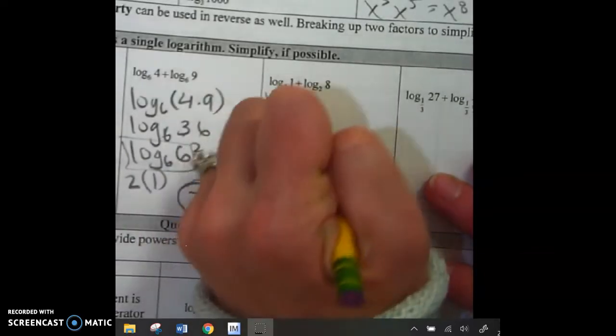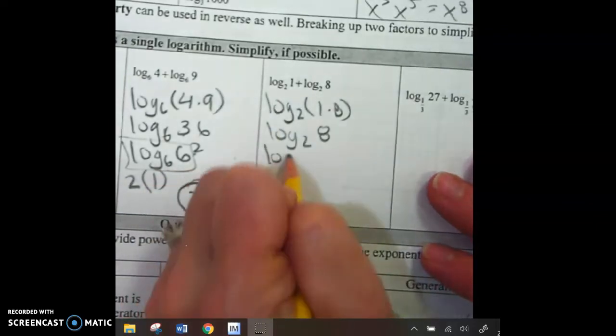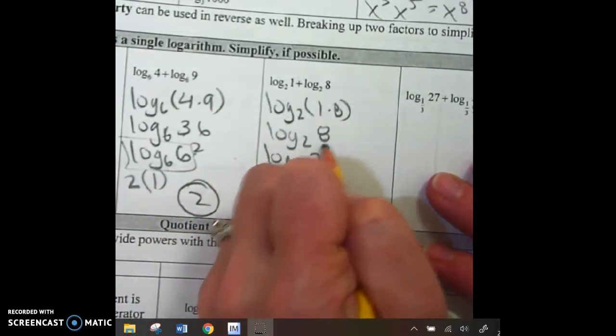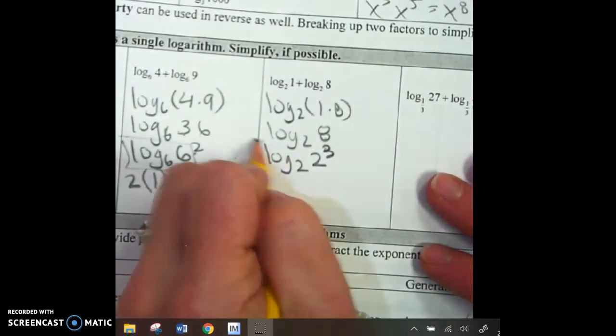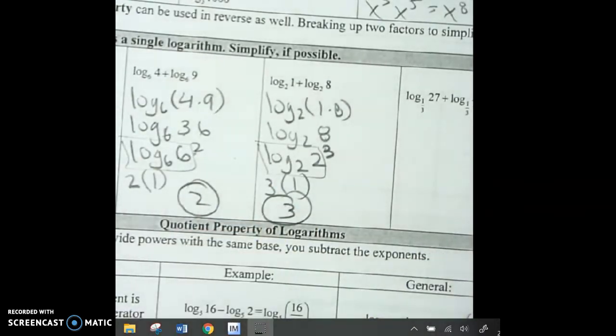Let's go to the next one. Log 2. 1 times 8. Log 2. 8. As soon as I see base 2, what do I want to do? Change it to 2. 2 to the what equals 8? 3. Log 2, 2. 1. Little turns big. Done.